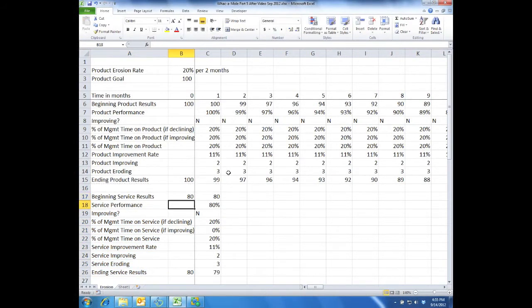To make it interesting, I'm going to begin service at 80, so it's a little bit of a problem in the beginning. Product's okay, service is not quite okay. Like I said on the board, I'm going to change this to indicated percent of management time on service.